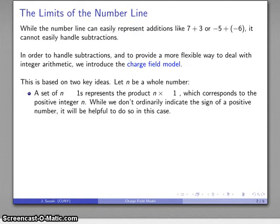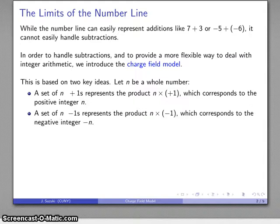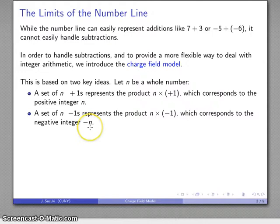We don't ordinarily indicate the sign of a positive number, but it's actually helpful to do so in this particular case. So rather than thinking about this as n ones and as a product n times one, I'll think about this as n plus-ones — that is, n times a plus-one. This is useful because for the negative integers, I can take a set of n negative-ones, and this product — n times negative one — corresponds to the negative integer minus n.